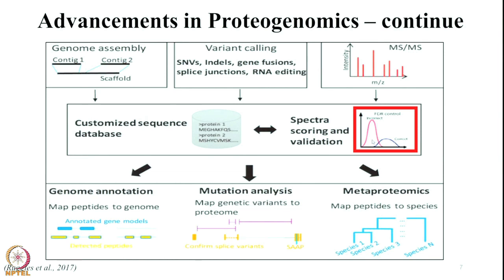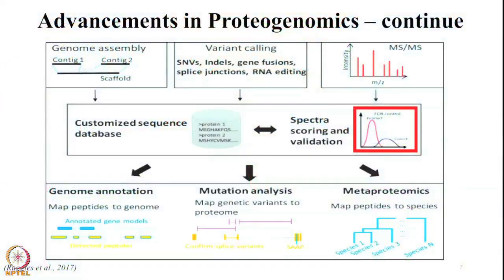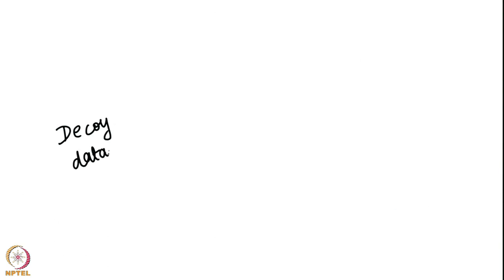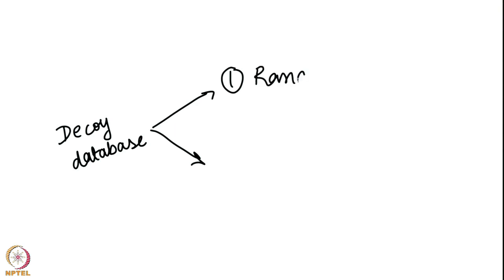One more component plays a very important role — that is FDR control. FDR stands for false discovery rate, and it helps in removing all the contaminants which can possibly come from the very first step of sample collection to the last step of subjection to mass spectrometry. For this, we need to make a decoy database. There are two methods by which one can make a decoy database: one is randomization and the second is reverse.